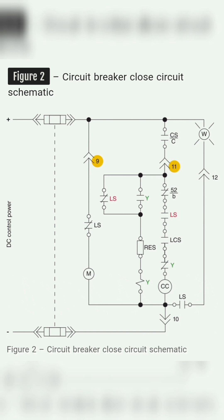Downstream of the latch check switch LCS is a normally closed contact from the anti-pump relay Y. The anti-pump relay Y acts as a one-shot device. As shown in Figure 2, the anti-pump relay is driven by the close signal on stab pin 11 and the position of the charging spring limit switch normally closed contact. Before the breaker is closed, the anti-pump relay is not yet energized as the charging spring limit switch is open. Once the breaker closes, the closing spring discharges, closing the normally closed charging motor limit switch LS, which energizes the anti-pump relay coil Y. The Y relay seals itself in with the Y relay normally open contact in parallel with the LS normally closed contact. The normally closed contact from the Y relay prevents the close coil from being re-energized until the anti-pump relay Y resets.